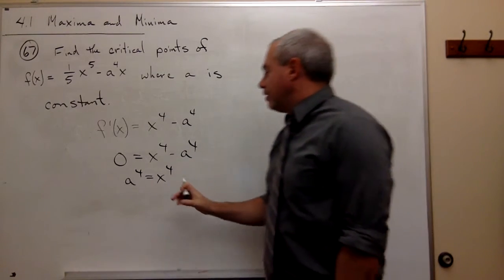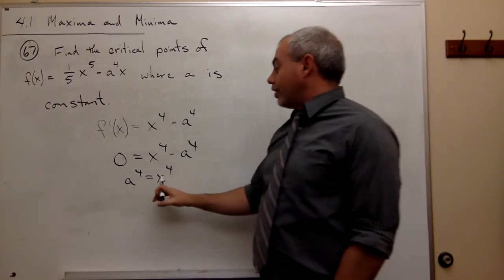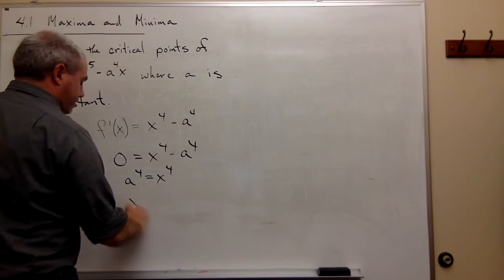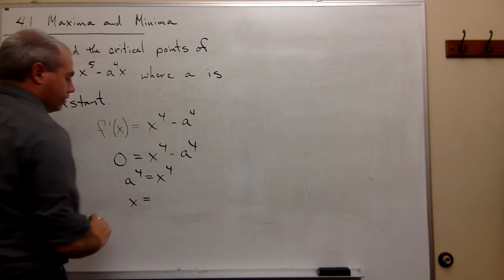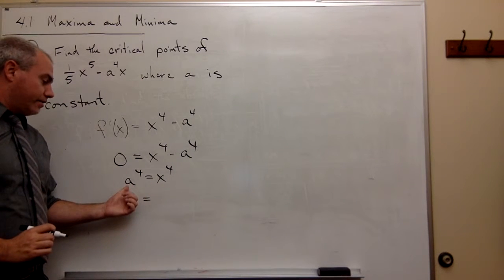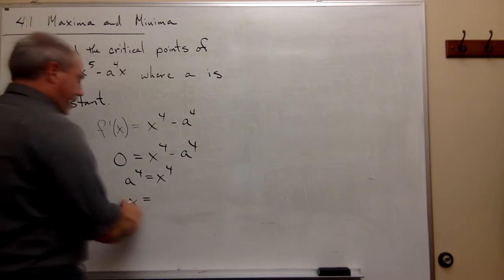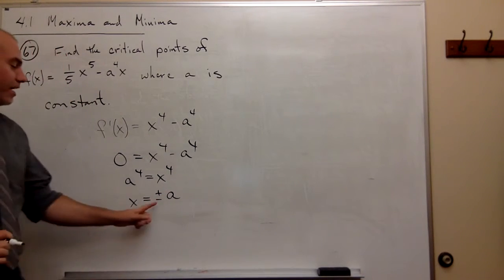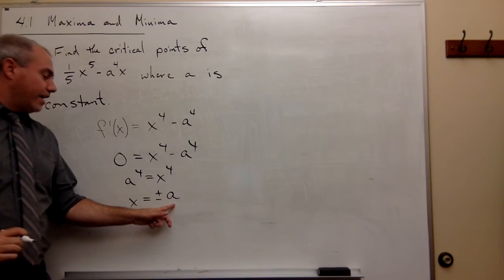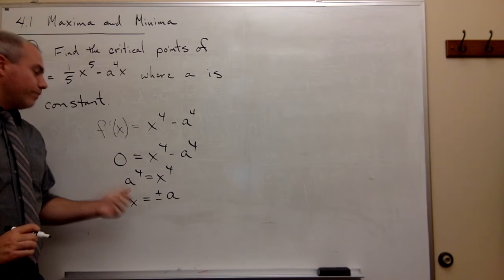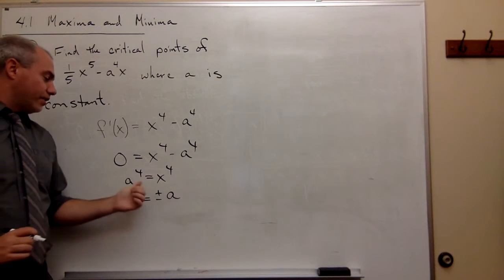So we could take a 4th root of both sides, and we would get that x is equal to... there's a temptation here to just say a, but we really should say that x could be plus or minus a, because if you think about it, if you took negative a and you raised it to the 4th power, well, it would be the same as taking a to the 4th power.